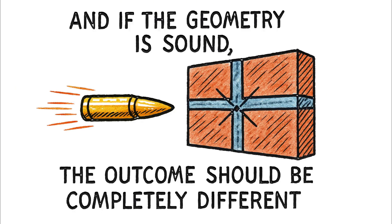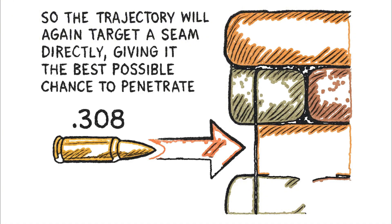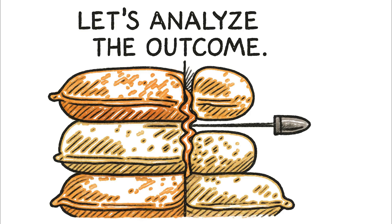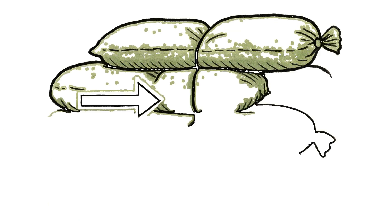And if the geometry is sound, the outcome should be completely different, so the trajectory will again target a seam directly, giving it the best possible chance to penetrate. Let's analyze the outcome. The illustration shows the impact point directly on the vertical seam between two bags.